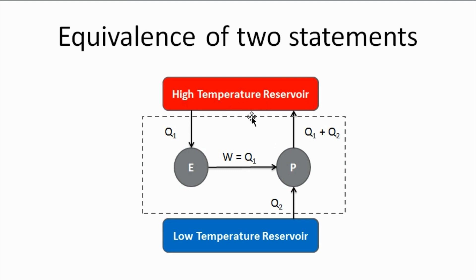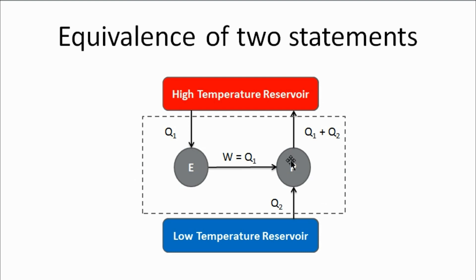Therefore, the net heat given to the high temperature reservoir is Q2. Looking at the low temperature reservoir, Q2 amount of heat is taken out from it. Considering this as a whole single system, we observe that Q2 amount of heat is taken from the low temperature reservoir and Q2 amount of heat is given to the high temperature reservoir, with no external energy given to the whole system. This means the system transfers heat Q2 from the low temperature reservoir to the high temperature reservoir without consuming any form of work, which is a violation of the Clausius statement.